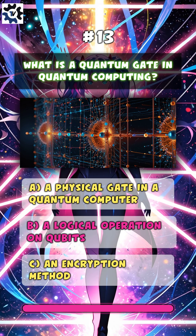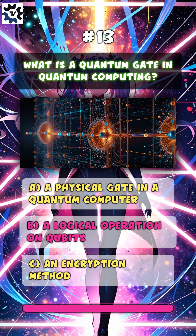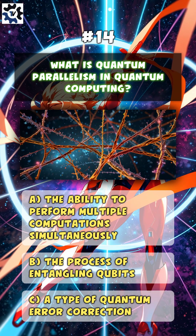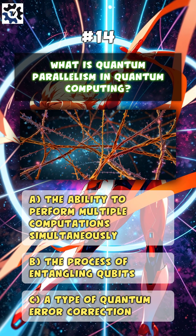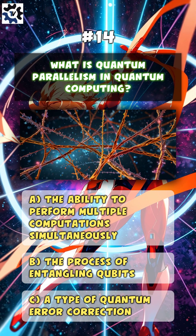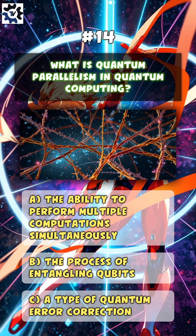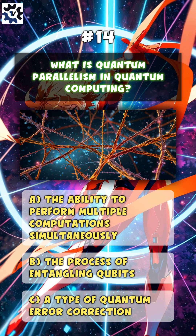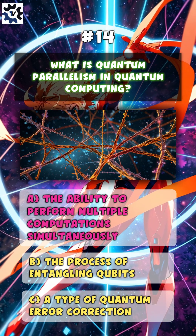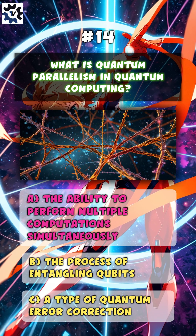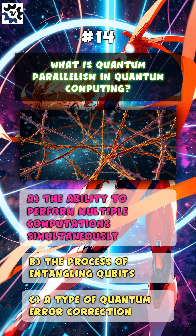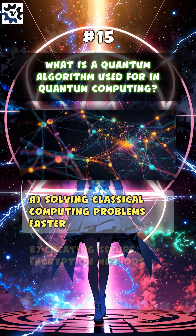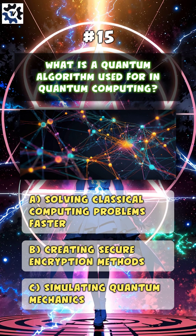What is a quantum gate in quantum computing? The answer is B: a logical operation on qubits. What is quantum parallelism in quantum computing? The answer is A: the ability to perform multiple computations simultaneously.